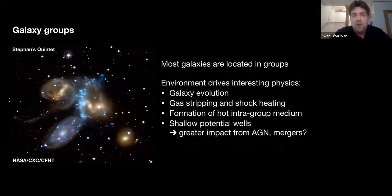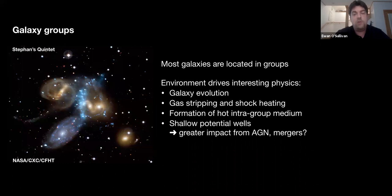As most of you know, most of the galaxies in the universe are actually located in galaxy groups — they are the most common environment. More than 50% of all galaxies live in a galaxy group, and more than 50% of the mass in the universe is located in galaxy groups, compared to a few percent of galaxies in galaxy clusters. Groups are an interesting environment because they bring galaxies close together at low velocities, promoting interactions and mergers, which drive galaxy evolution — the transformation of galaxies from spirals to S0s and ellipticals. Those tidal interactions also drive gas stripping, and we do see evidence of shock heating in groups.